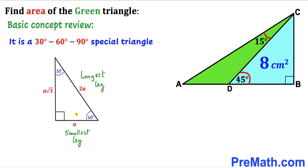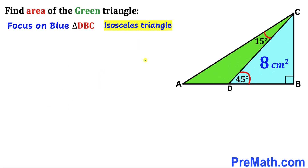For example, if the smallest leg is 5 units then the longest leg is going to be 10 units and the third leg is going to be 5 times square root of 3. Now let's move to our next step.